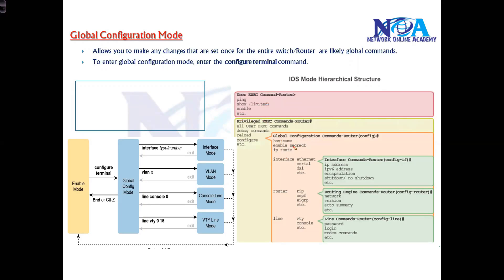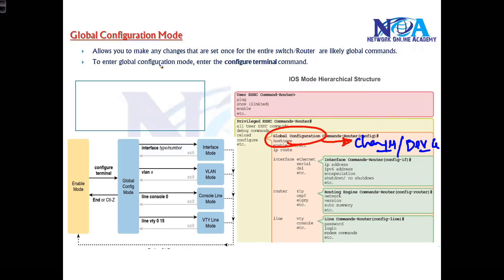Global configuration mode is the main mode from where we make changes. Whatever changes we make here are applied to the device. It allows you to make changes that are set once for the entire router or switch. These are called global commands, and you must be in global configuration mode to make such changes — like changing the hostname, which is just one single change applied globally.